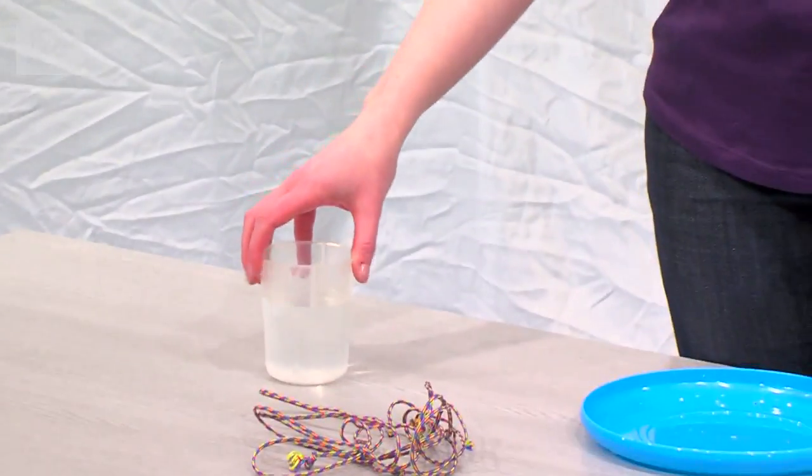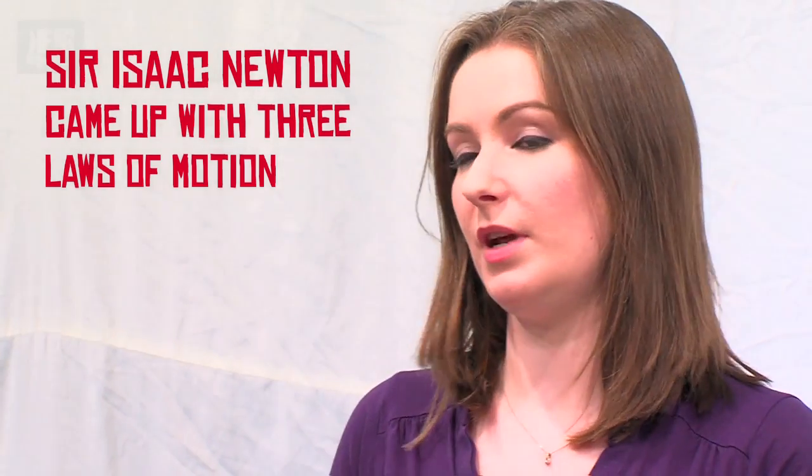So how am I going to spin this beaker of water above my head and not allow any of it to fall out? Well, for this we're going to look at some laws of motion. Now, Sir Isaac Newton came up with three laws of motion that are most commonly applied to objects moving in a straight line, but they can be applied to objects that spin. We know this because we live on one.